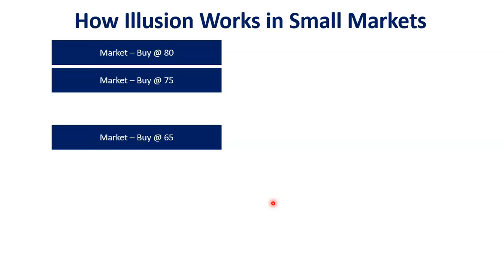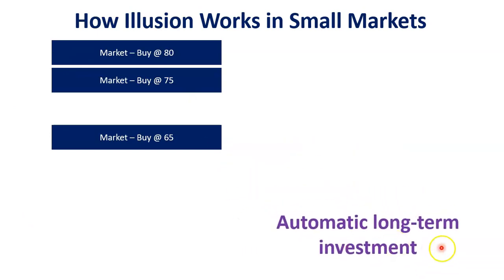If you have a bias, you will not be afraid of the bias. If you have a market participant, you will be able to automatically convert to long-term investment. Now you can see how you trade. Then you will have a look at the illusion and see how you sell. If you sell it, you will only sell it, but if you try to sell it, you will not be able to.